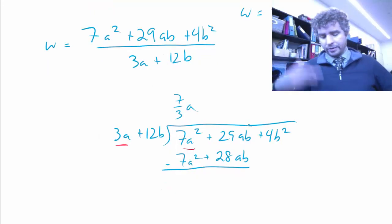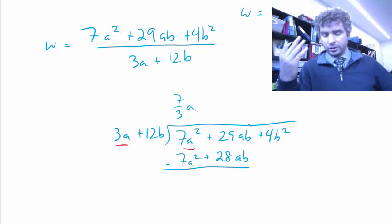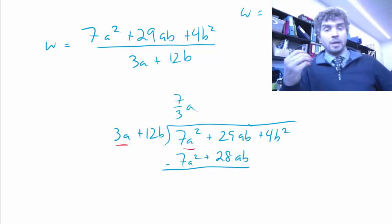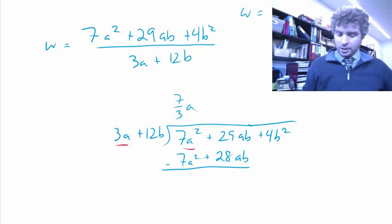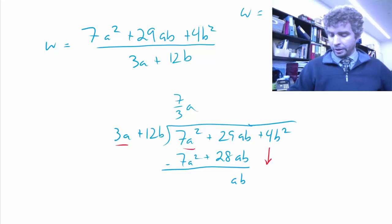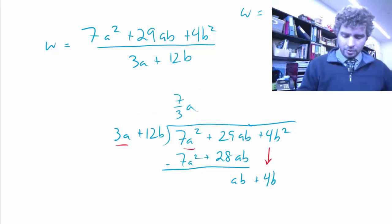And the 7a squared minus 7a squared, those cancel out, that's 0. 29ab minus 28ab is 1ab, or just ab. Now I'm going to bring down my 4b squared next to my ab.